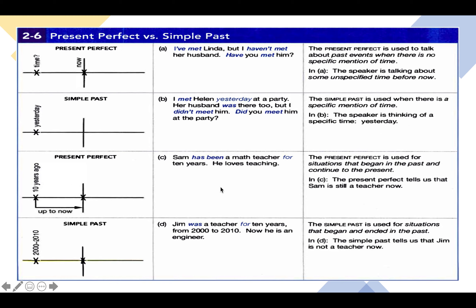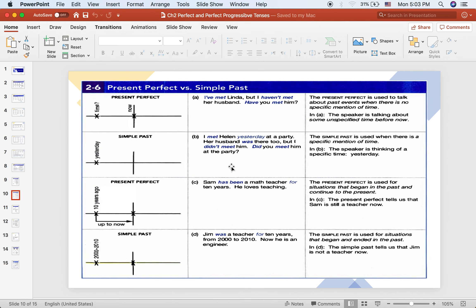In the Sam example, the action continues up to now, so we use the present perfect. In the John example, it doesn't continue up to now, so we use the simple past: 'was a teacher for 10 years.' This period of time is entirely past. These are the main differences between using the present perfect and the simple past.